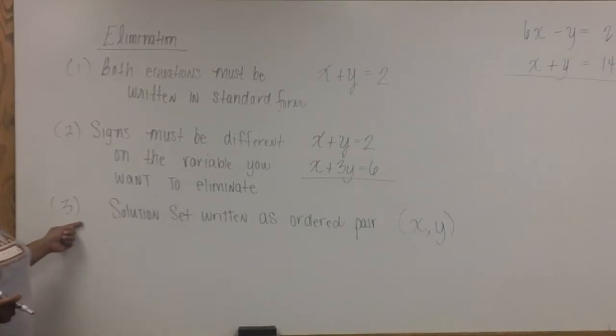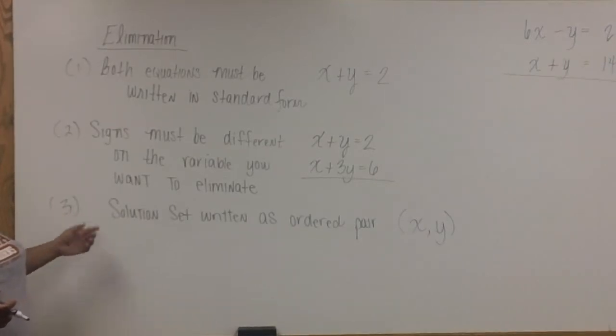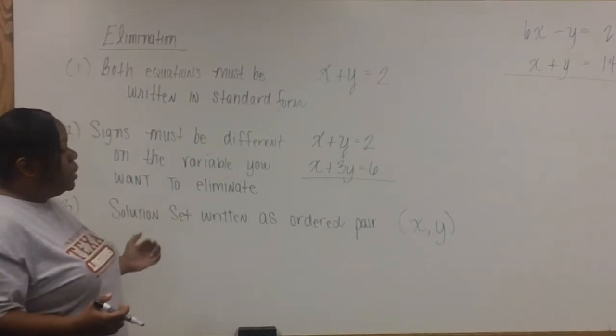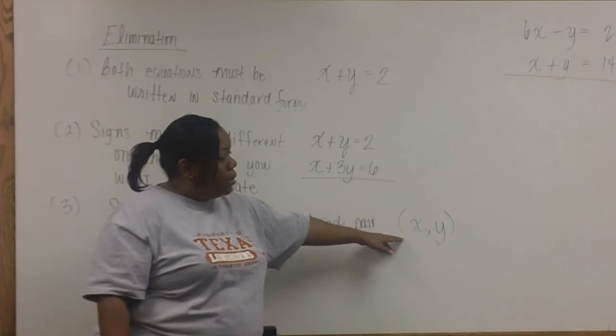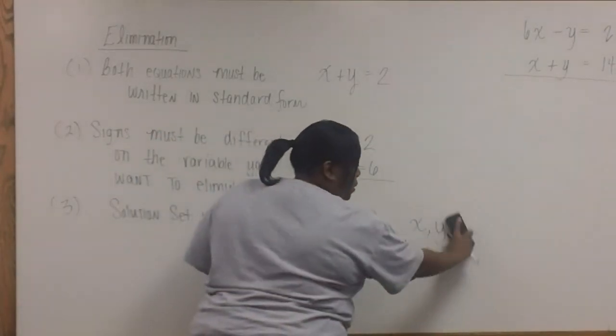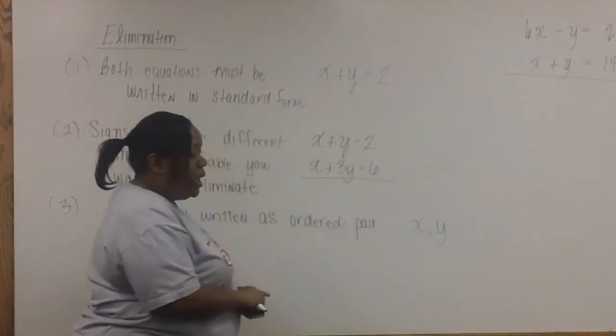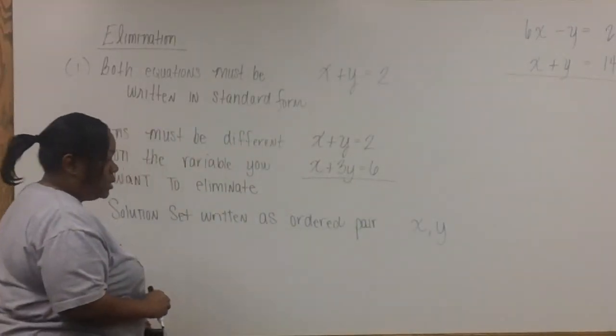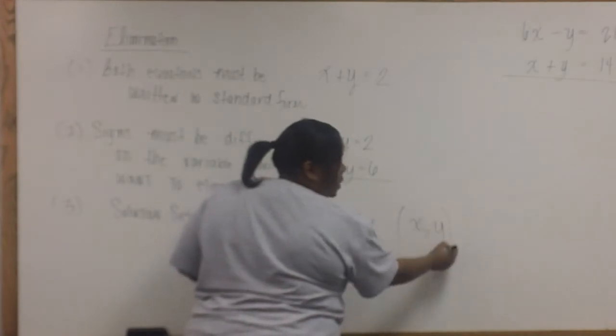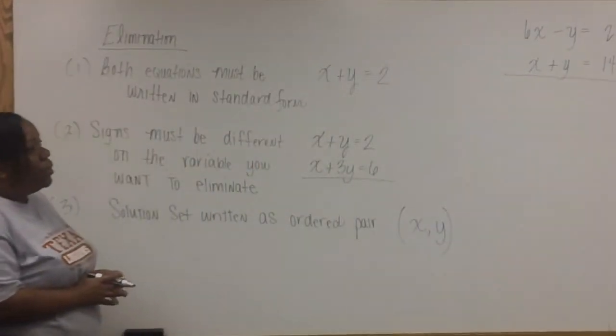And the third thing, it may not seem like a big deal, but you can miss an entire problem if you don't follow through on this rule. When you write the solution set, it must be written as an ordered pair. If you don't include parentheses, this is not an ordered pair, and the answer is incorrect. So make sure you write the ordered pair, which means it must have parentheses, and it must be in alphabetical order.